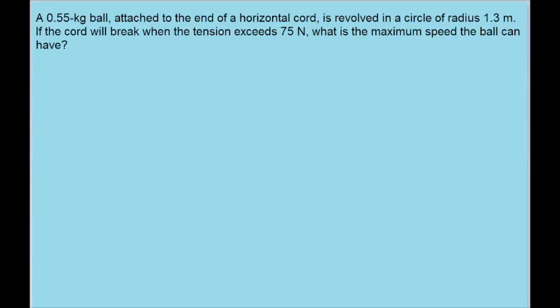In this problem, we're given some information about a ball attached to a string and being spun around, and we want to find what the maximum speed is. We're given what the maximum tension can be, so we'll assume we're looking at that particular case. The formula for centripetal force — the force we're looking at when we have circular motion — is equal to the mass of the ball times the square of the speed divided by the radius of the motion.